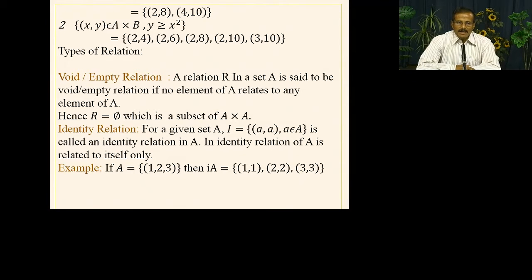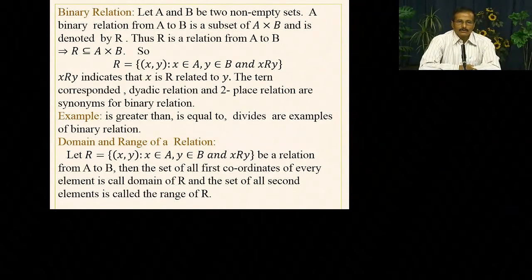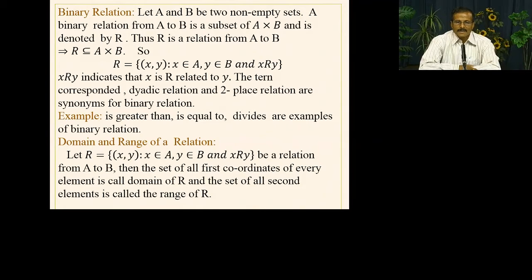For example, if A = {1, 2, 3}, then the identity relation I_A is {(1,1), (2,2), (3,3)} — every element maps to itself. After that, we talk about binary relation. We have two non-empty sets, and a relation R from A to B will be a subset of A×B. It can be a proper subset or equal to A×B.